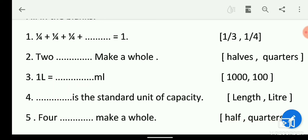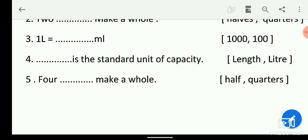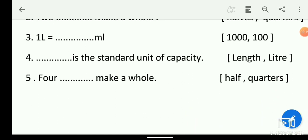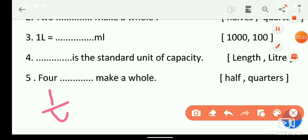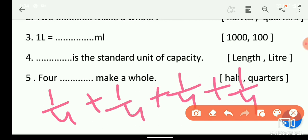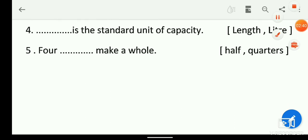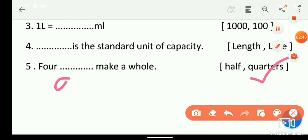Now let's see question number 5: four blanks make a whole. So 4 quarters make a whole. As we have already seen, 1/4 + 1/4 + 1/4 + 1/4 equals 1. The same question was given earlier in fraction form, and this one is in words. So we will tick mark the second option, which is 'quarters.'